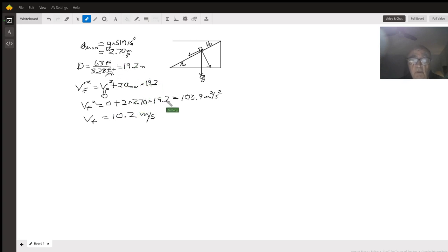You come out with 103.9 meters squared per second squared. Take the square root and you get that the final velocity is 10.2 meters per second. I hope this helps you, thank you for listening.